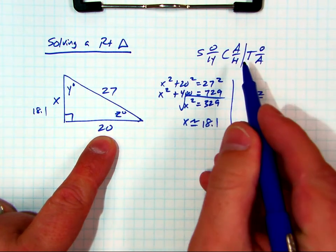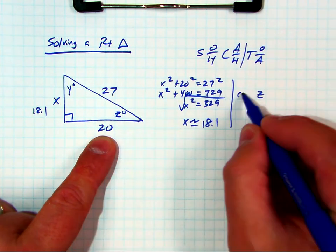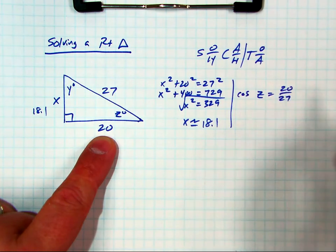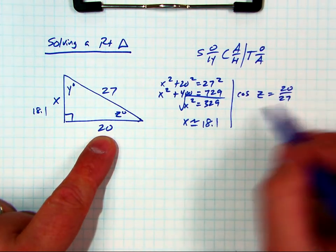Remember, you're supposed to write SOHCAHTOA like this every time you try a problem. So cosine of z equals 20 over 27. All right, now how do we isolate z? We take inverse cosine of both sides.